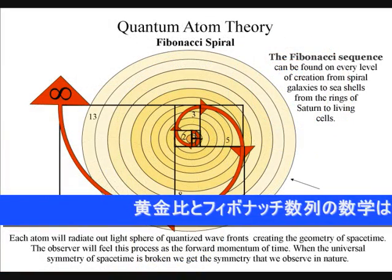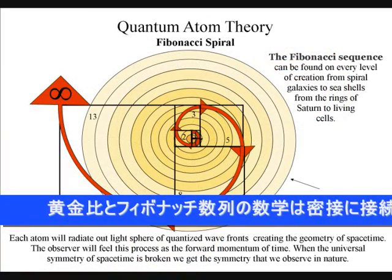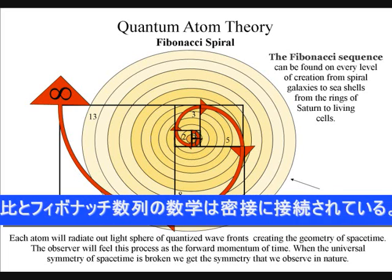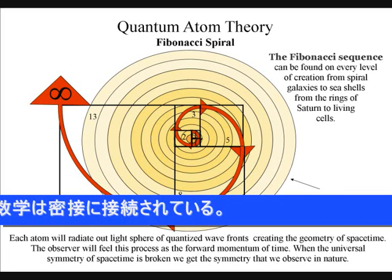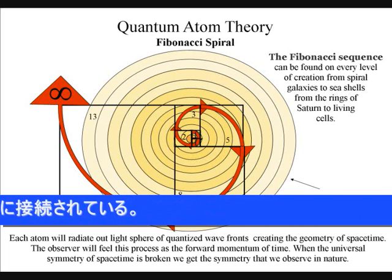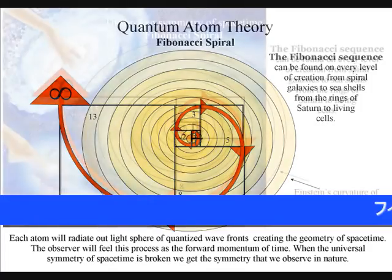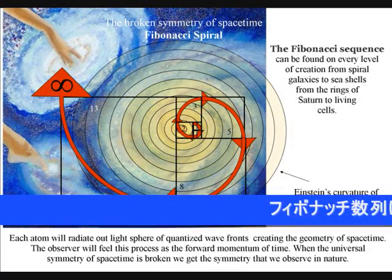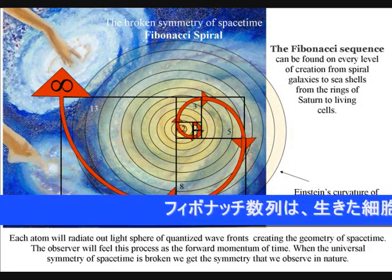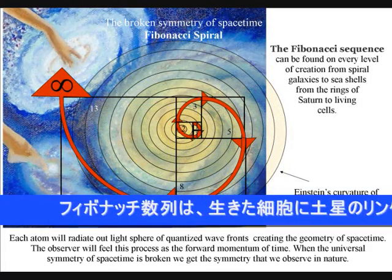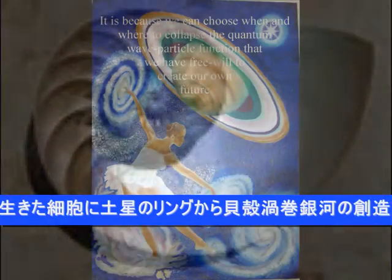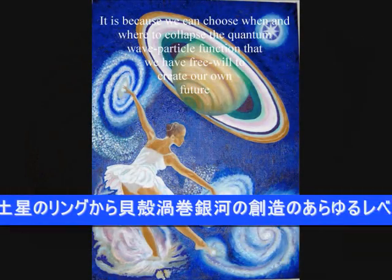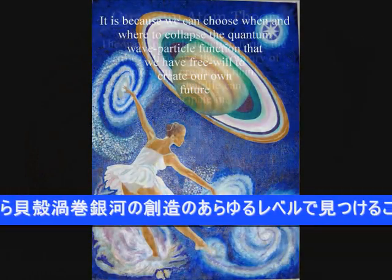The mathematics of the golden ratio and the Fibonacci sequence are intimately interconnected. The Fibonacci sequence can be found on every level of creation, from spiral galaxies to seashells, from the rings of Saturn to living cells.